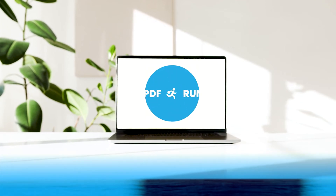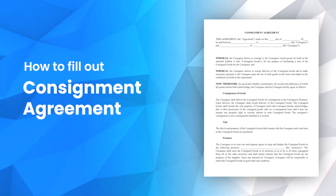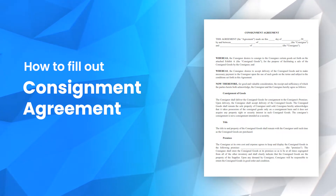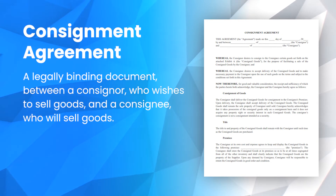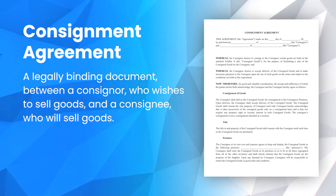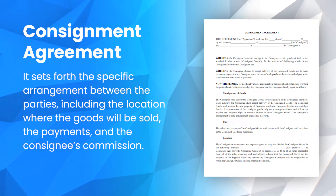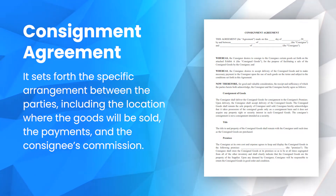Welcome to PDF Run. In this video, we'll guide you on how to fill out a consignment agreement. A consignment agreement is a legally binding document between a consigner who wishes to sell goods and a consignee who will sell goods. It sets forth the specific arrangement between the parties, including the location where the goods will be sold, the payments, and the consignee's commission.